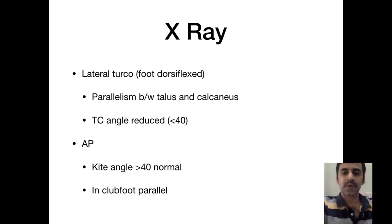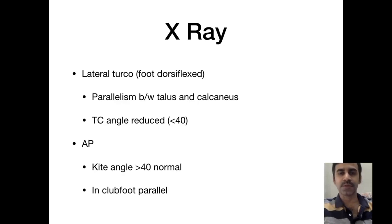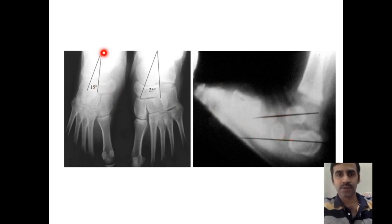X-rays include the lateral Turco view and the AP view. We are looking for the talocalcaneal angle and the relationship between the talus and the calcaneus. The normal talocalcaneal angle is more than 40 degrees; if it is reduced, it suggests club foot. On the lateral forced dorsiflexion view, we can see parallelism between the talus and calcaneus, which is typical of club foot. In the right X-ray, the talocalcaneal angle is decreased, again suggestive of club foot.